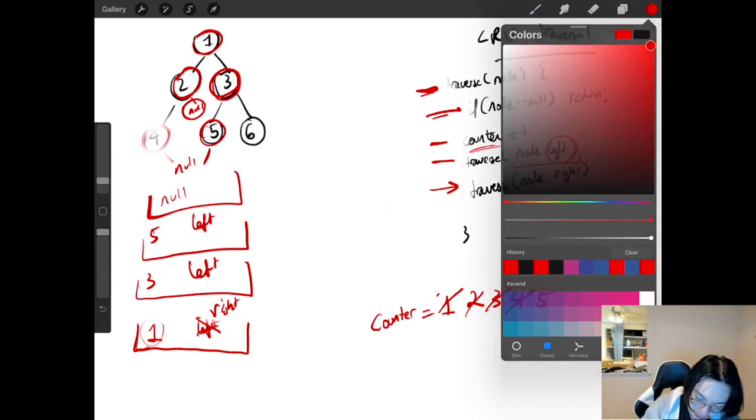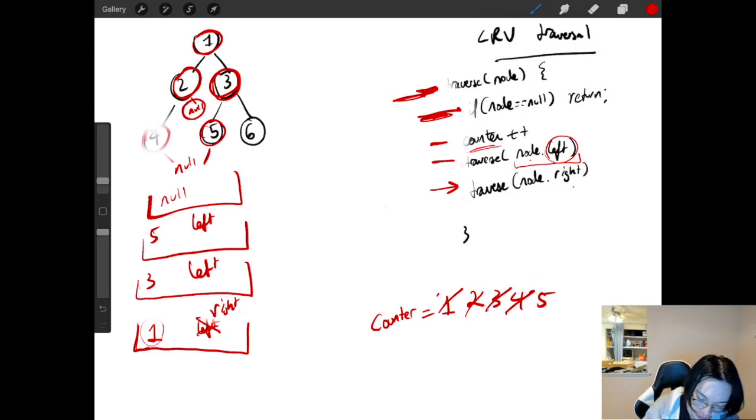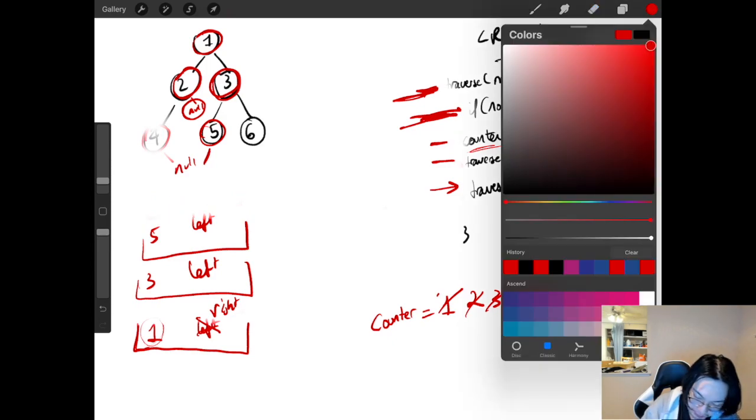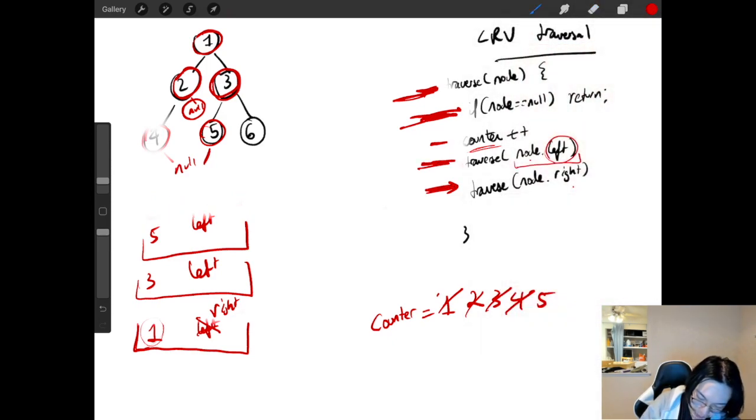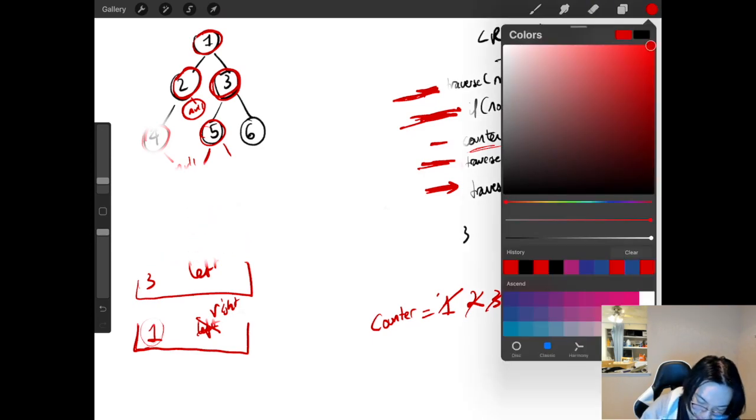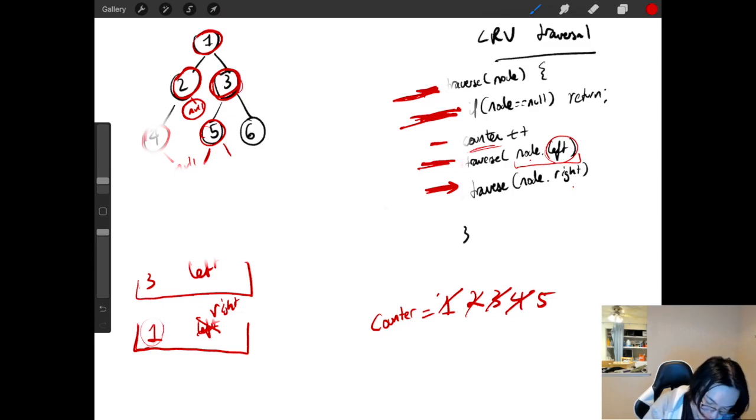And now we arrived back at the top of the function. Node is equal to null. So now we return. Pick up where we left off with five. Then we're going to go to the right. Right of five is null. Back to the top of the function. Node is equal to null. Return. Pop this off. We're done with right. We're done with five as well, because right is the last function call. So now we pick up where we left off with three. Go to the right, which is six.